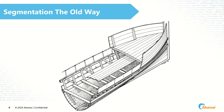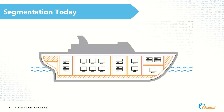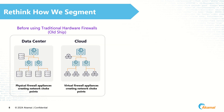Segmentation the old way is similar to how ships were first built — if there was a breach to the open hull, the ship would sink. The open hull is synonymous to a flat network. Segmentation today is similar to the new way of building the same ship, but now using compartments so a breach to one part of the hull doesn't sink the ship. In networking, segmentation works in the same manner.